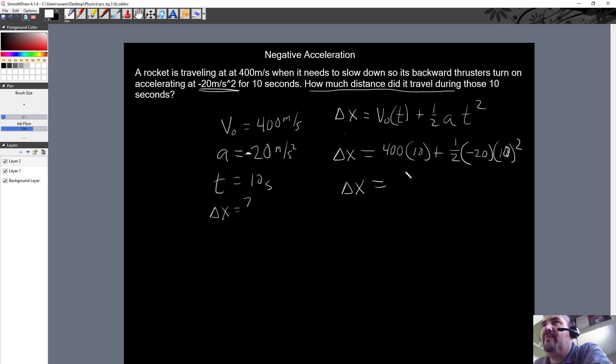Let's see if we can do a couple of these at the same time. We know that 400 times 10 is 4000, and we know that one-half times negative 20 is negative 10—a half of 20, correct. And then 10 squared is 100, 10 times 10. So this is going to be negative 1000, and a plus negative is just a negative, right? So we'll just leave it there.